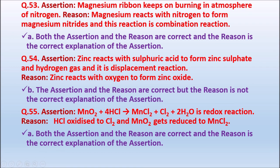Question 55: Assertion: MnO₂ + 4HCl → MnCl₂ + Cl₂ + 2H₂O is a redox reaction. Reason: HCl is oxidized to Cl₂ and MnO₂ is reduced to MnCl₂. Both assertion and reason are correct and the reason is the correct explanation of the assertion. The correct answer is Option A.